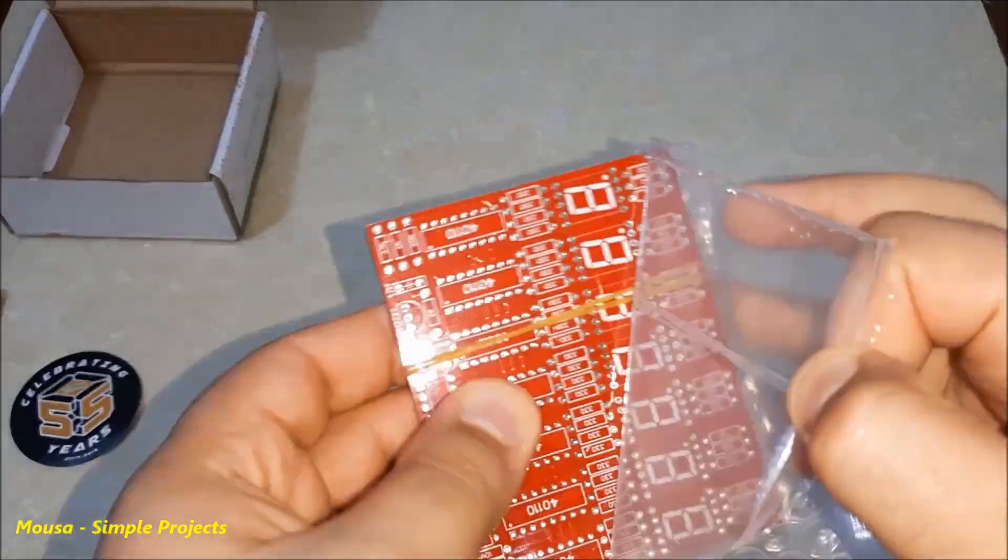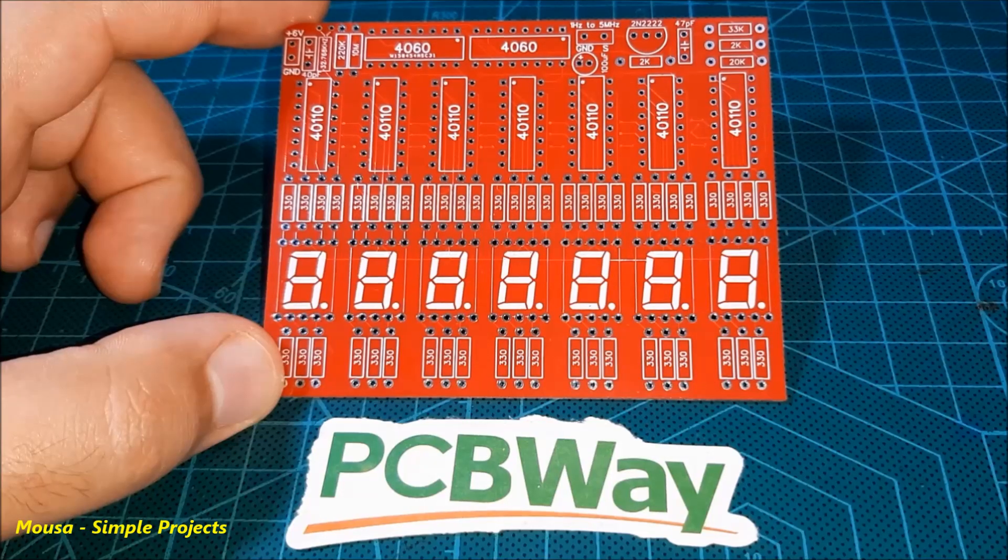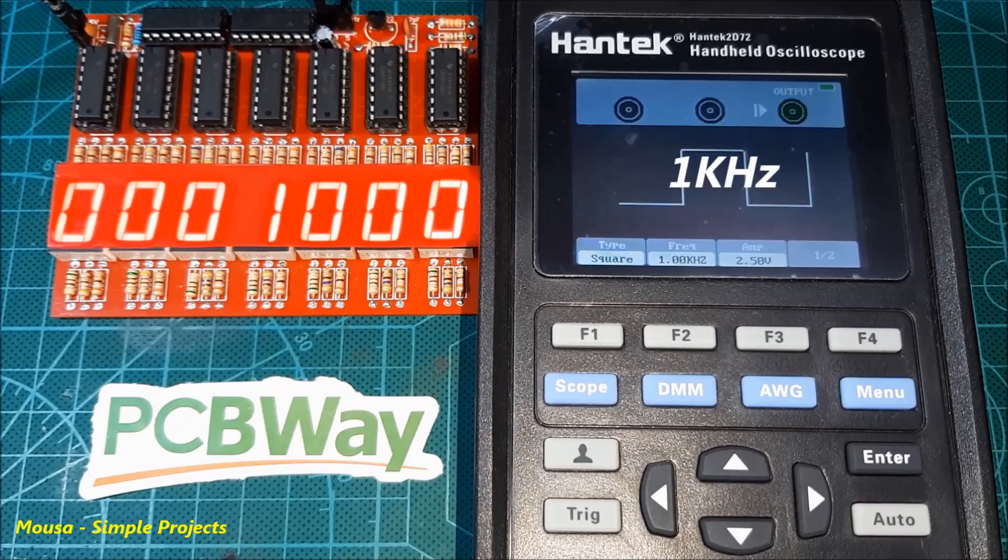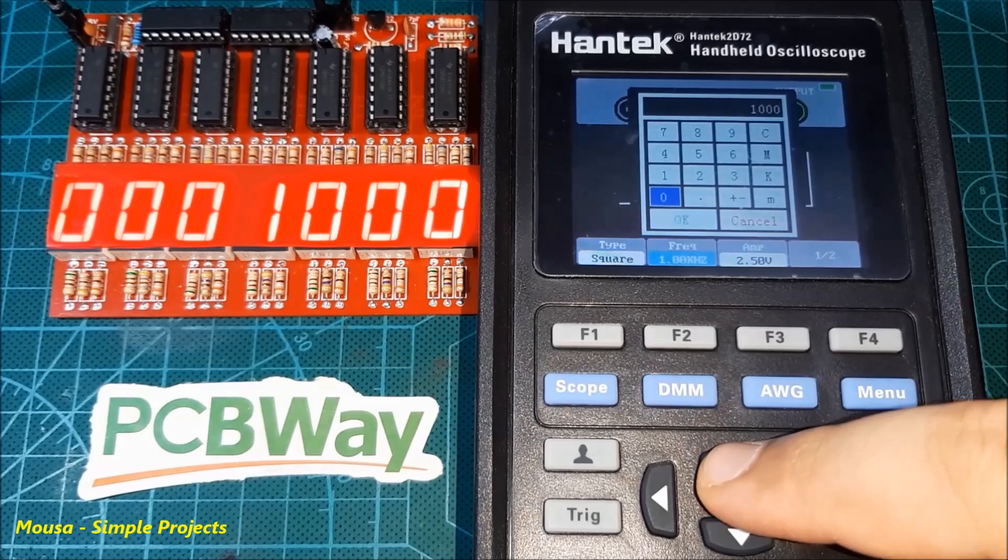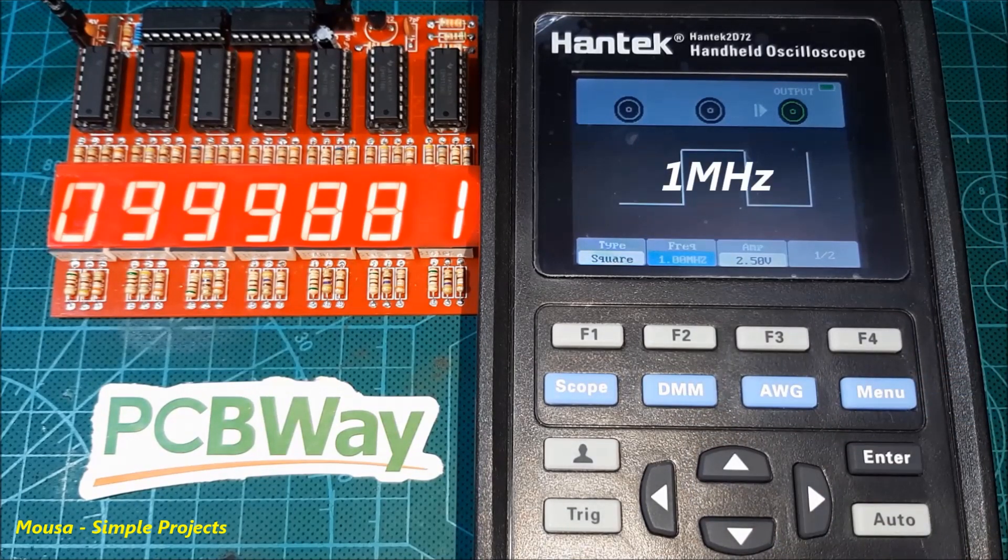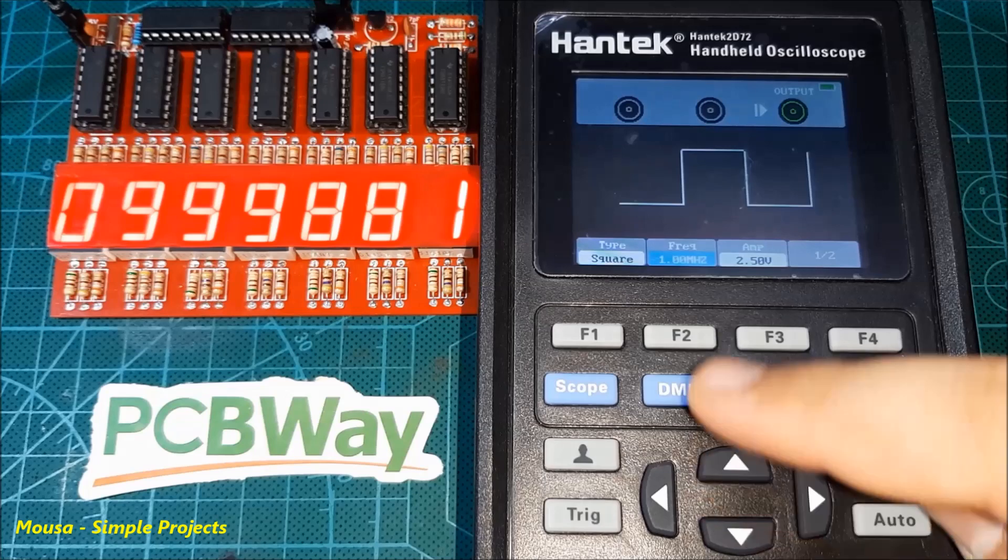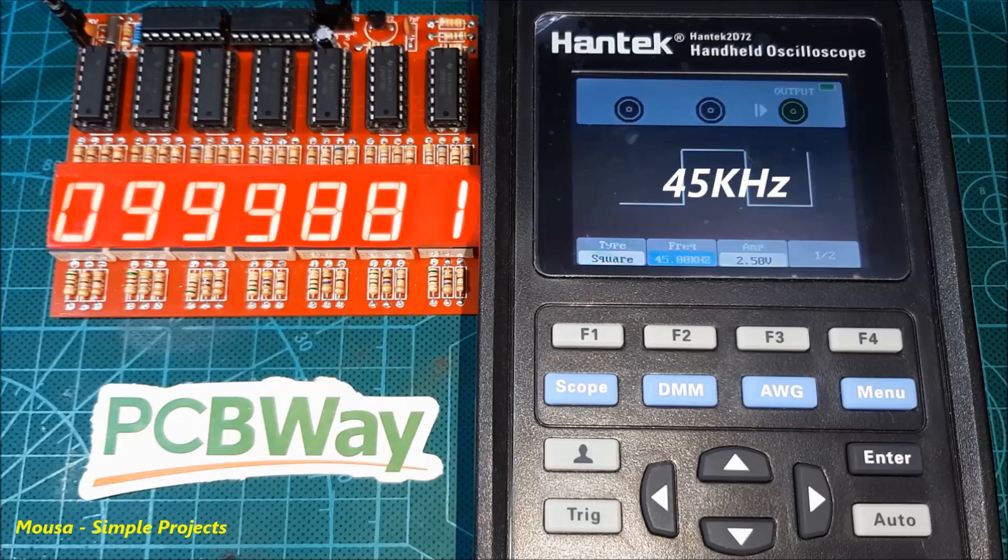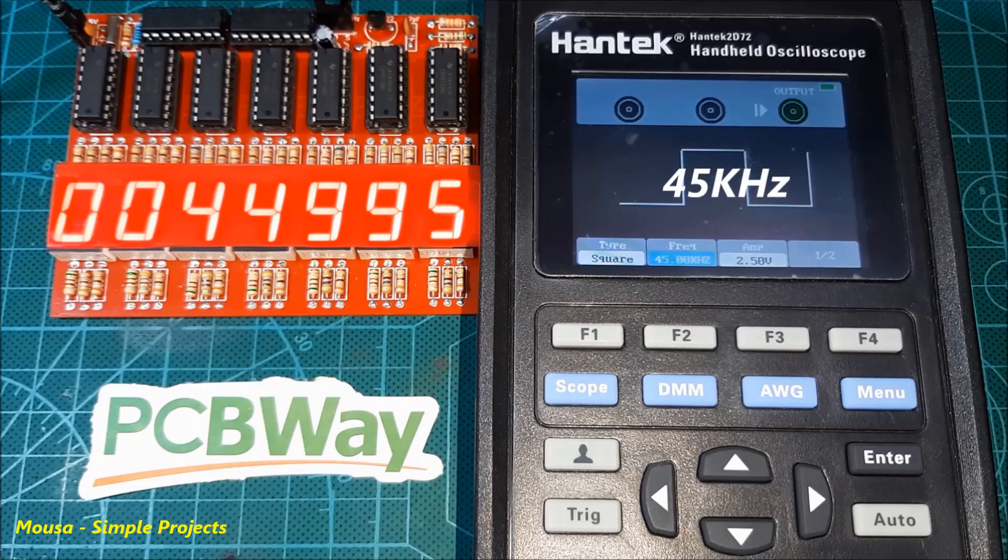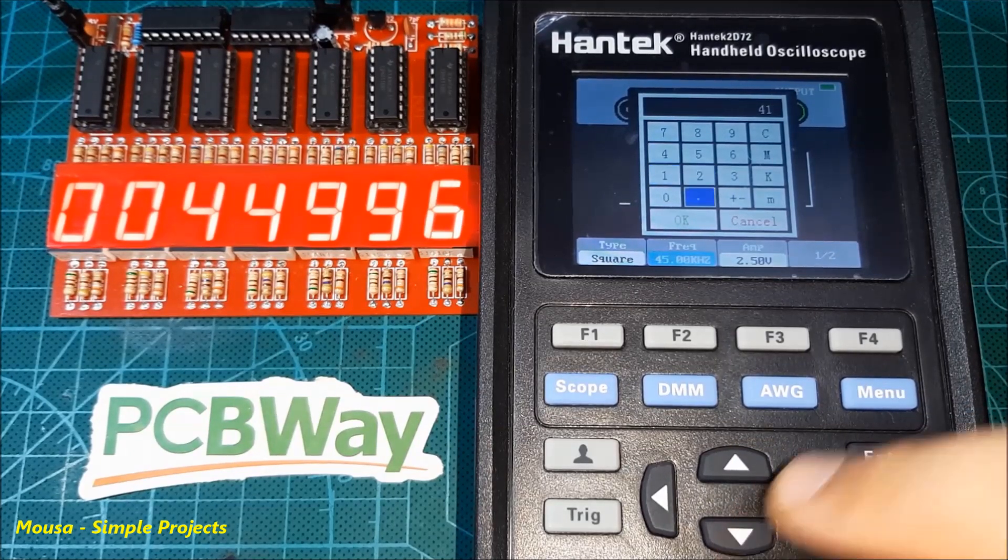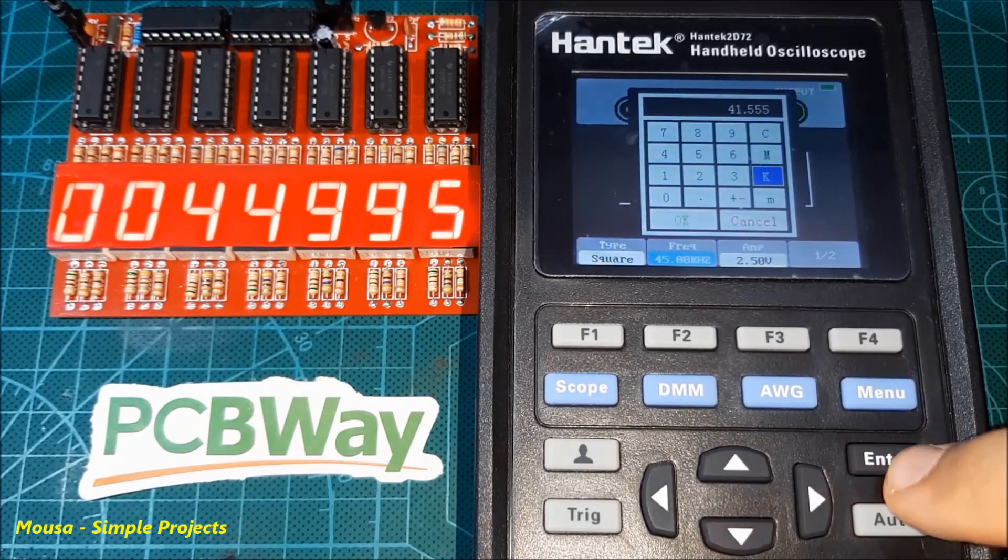Then I soldered the components on the PCB. As you can see, it's working, but the counted frequency is slightly less than what it should be. When the input frequency is one megahertz, my circuit reads 999.88 kilohertz. It is very close to one megahertz, but as I said before, this is just an educational project. I think there are some problems in the crystal oscillator because I took it from an old circuit.